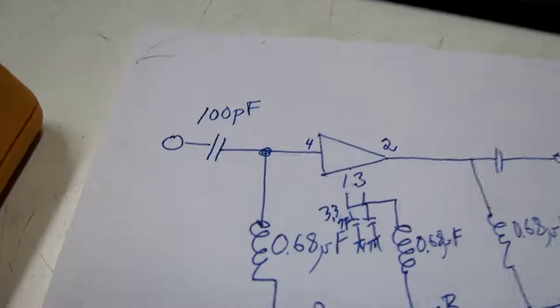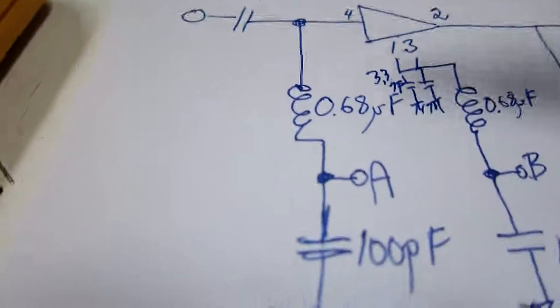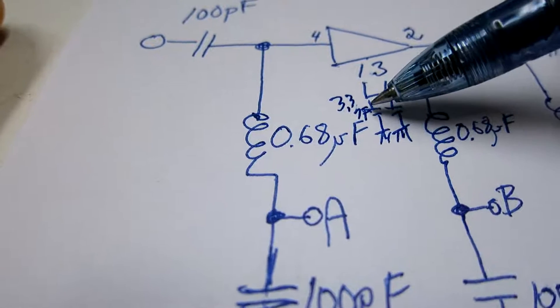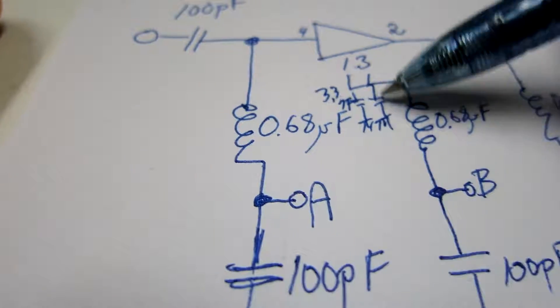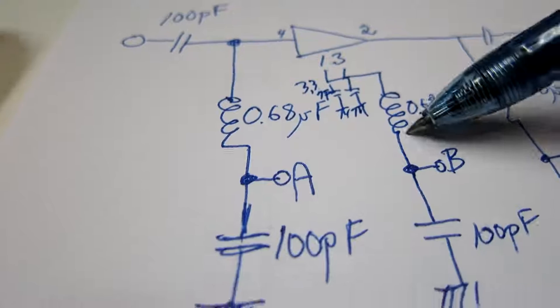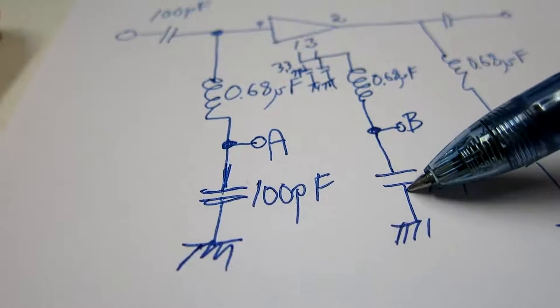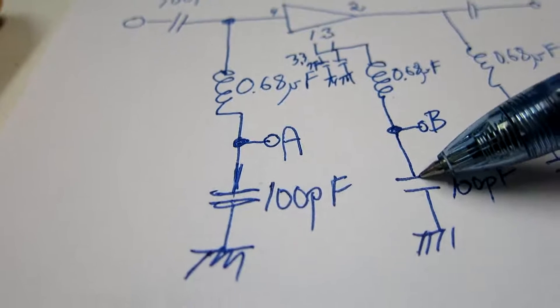So the ground connections are decoupled with two capacitors of 3.3 nanofarads. Then there is an inductor and decoupled by 100 pf. That's also a mechanical protection.